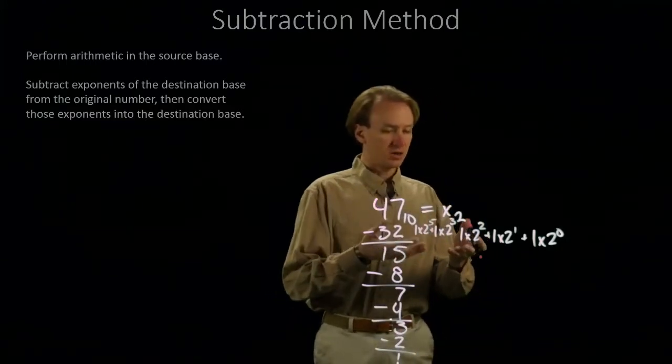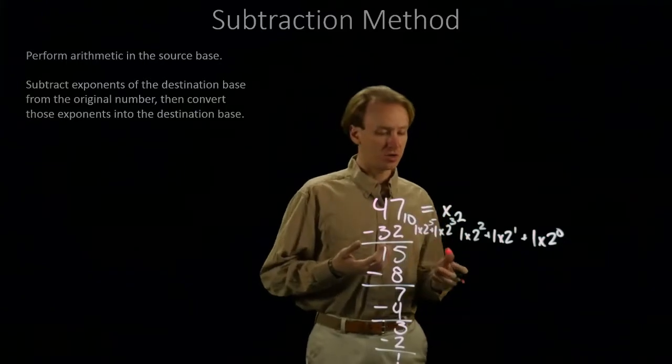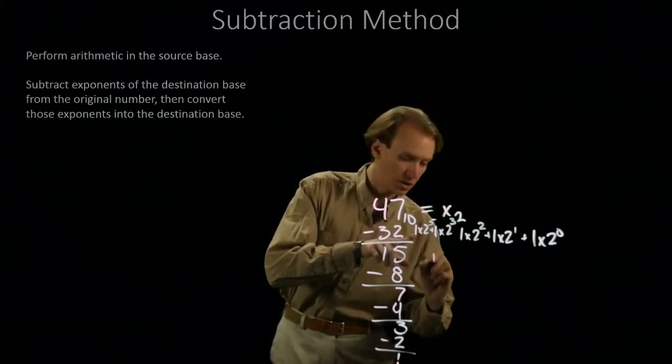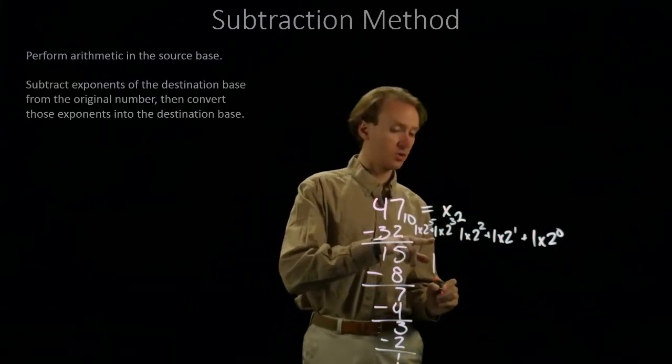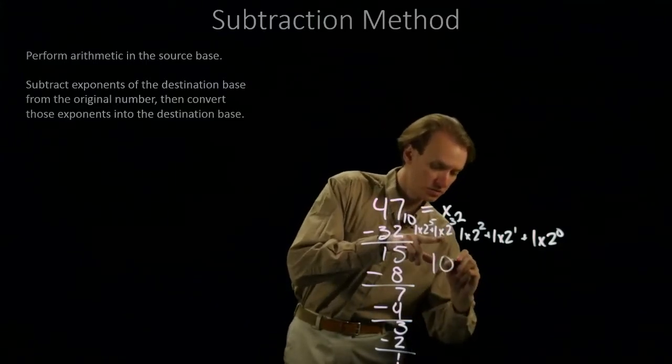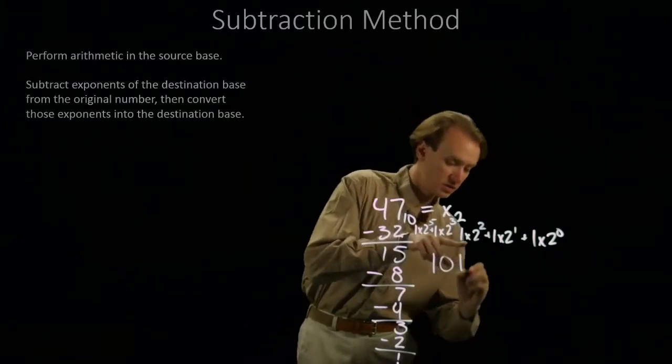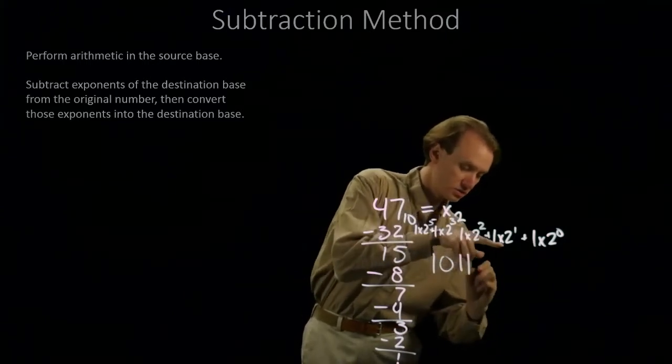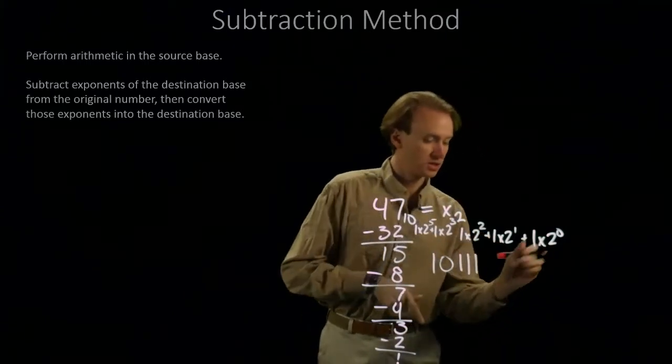Now I'm going to want to take all of those and turn those back into a regular number. I'll have 1. I don't have a 2 to the 4th, so I'll put in a 0. I do have a 2 cubed. Then I have a 2 squared, a 2 to the 1st, and a 2 to the 0. There is my number in binary.